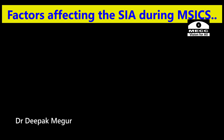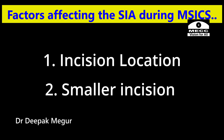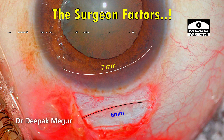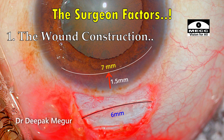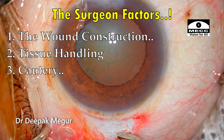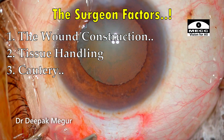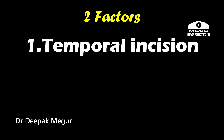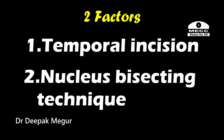Apart from these two major factors, there are the usual surgeon factors — how the wound is constructed, the tissue handling, the amount of cautery used, etc. So let's try to understand these two major factors: temporal incision and nucleus bisecting techniques.